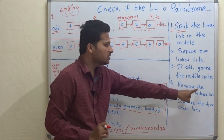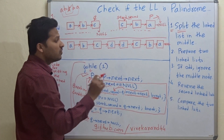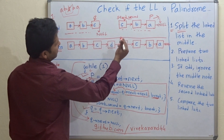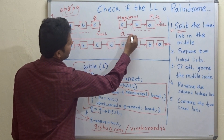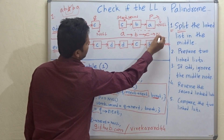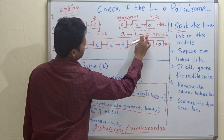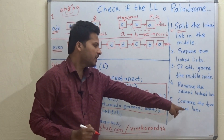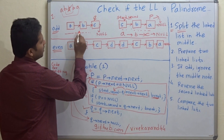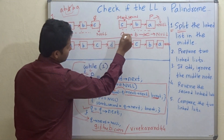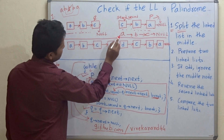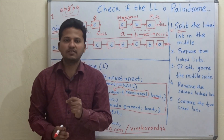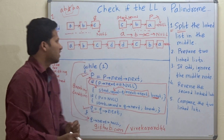The next step is to reverse the second linked list. After reversing, it becomes A, B, C pointing to null. The fifth step is to compare the two linked lists: A is matched with A, B is matched with B, and C is matched with C. This means yes, this is a palindrome.